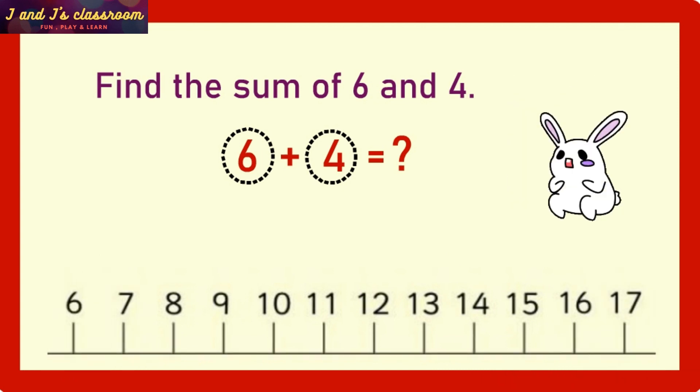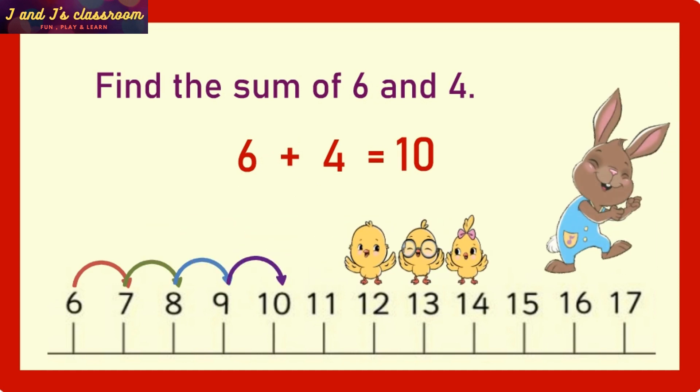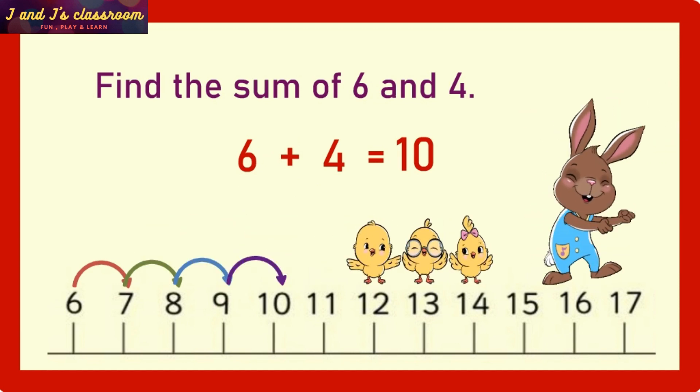Oh yeah, the bunny friend is ready to jump. Bunny, the first number is 6. So go and stand on the number line at 6. And the second number is 4. So jump four times from the number 6. 1, 2, 3, 4. Alright, now the bunny is in the number 10. Oh yes, that is the answer. So the sum of 6 and 4 is 10.